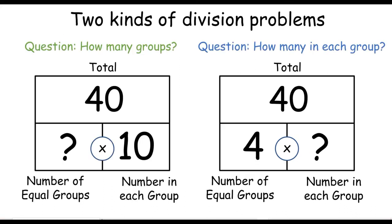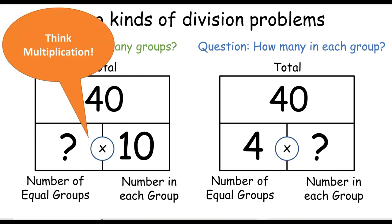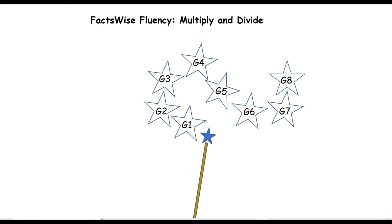So now we've seen that there are two kinds of division problems. Sometimes what we're trying to find out is how many groups, and other times we're trying to find out how many are in each group. Those are both division questions, as long as they're equal groups problems. And we've also found out that when we're trying to solve a division problem where we're missing a factor in the multiplication, we can just think multiplication. Thanks for visiting today, and you're on your way to being fluent with multiplication and division.